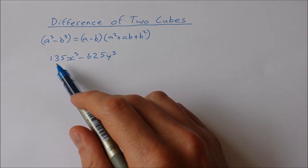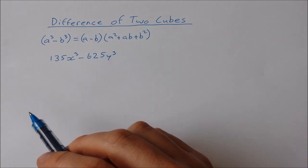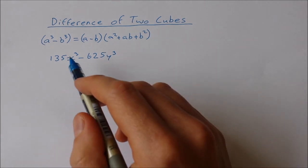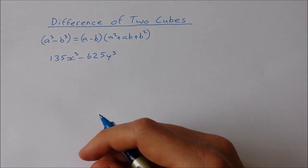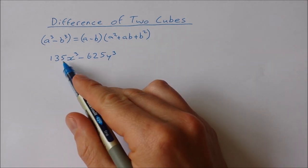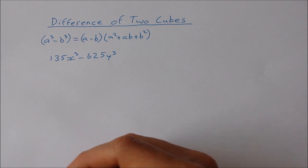Now we have an x³ and a y³, so we have a suspicion that it's the difference of two cubes. But 135 and 625 are not cubed numbers, so we need to take out a common factor first. The common factor I'm going to take out is 5.